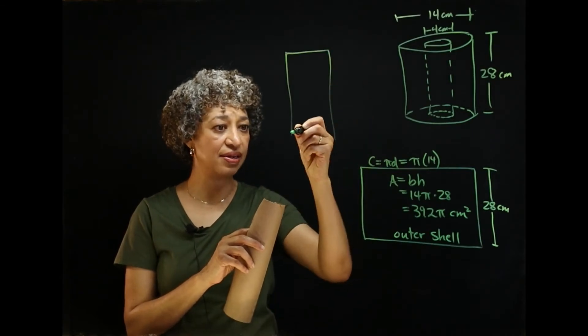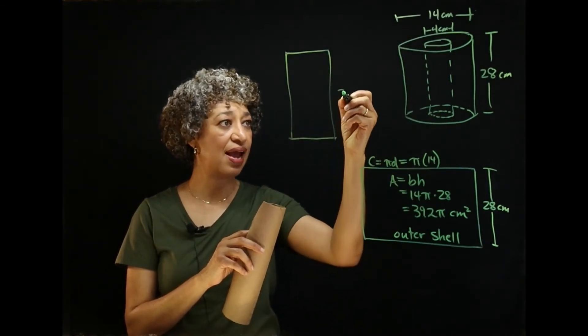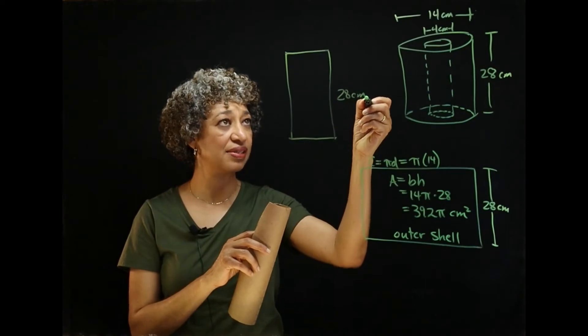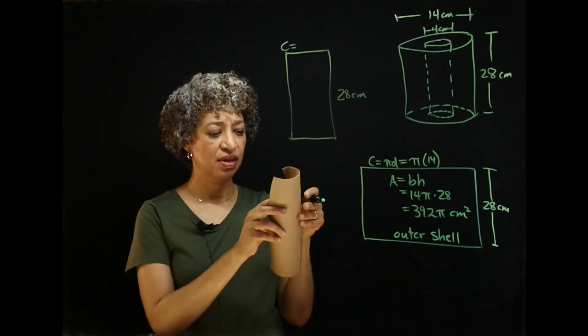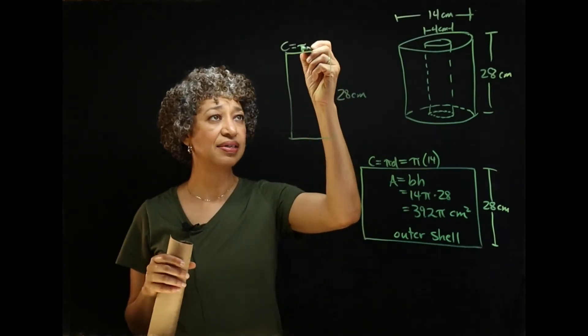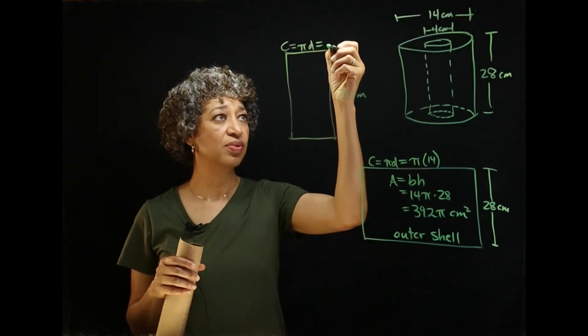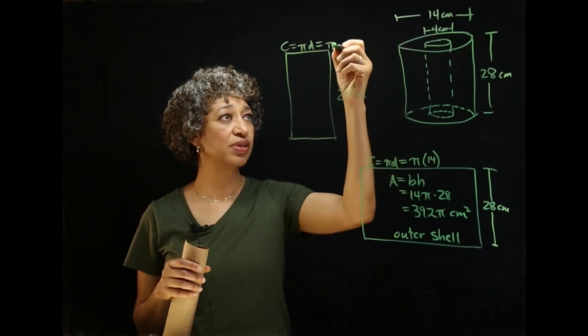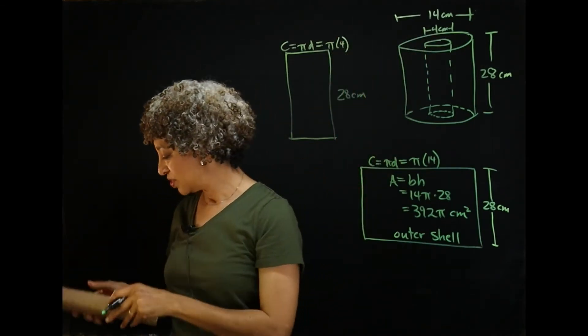It's the same height, but it's narrower. Here's the height, 28 centimeters. And this time, the circumference, of course, is much smaller. Circumference is pi times the diameter, which is pi times 4 centimeters.